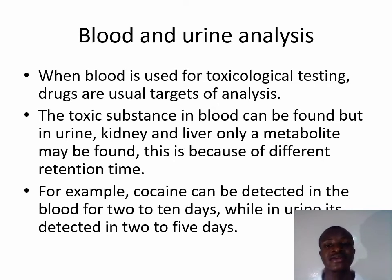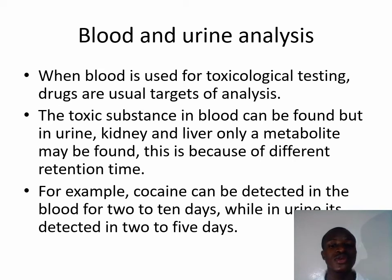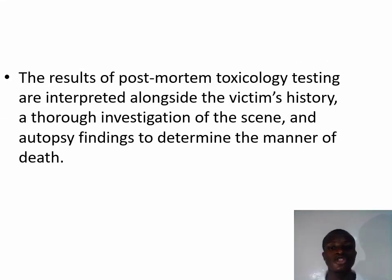When blood is used for toxicological testing, drugs are usually the target of analysis and the toxic substance itself can be found in blood. However, when using urine, kidney, and liver samples, only metabolites may be found, due to different retention times. For example, cocaine can be detected in the blood for two to ten days, while in urine it is detected for two to five days. Results of post-mortem toxicological testing are interpreted alongside the victim's medical history.